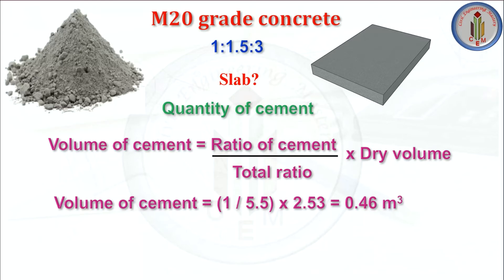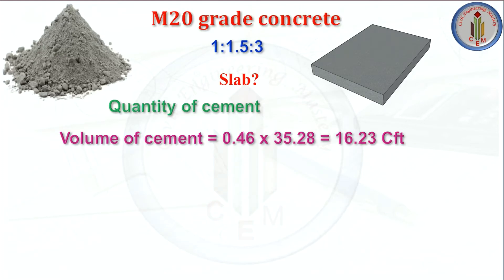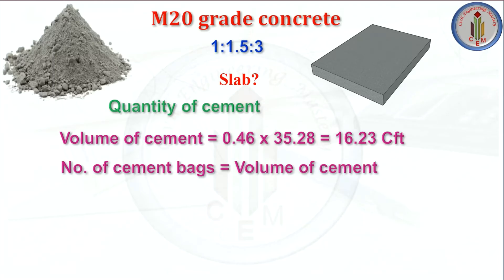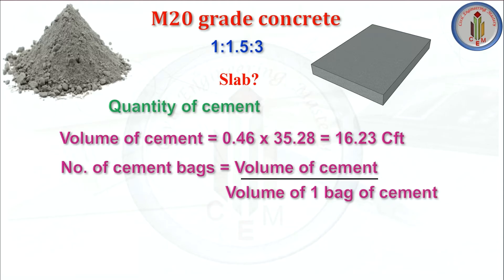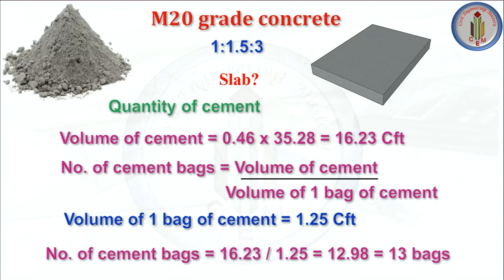Volume of cement is 0.46 meter cube. We need to convert this into CFT — 1 meter cube equals 35.28 CFT. So volume of cement equals 0.46 multiplied by 35.28, which gives 16.23 cubic feet. We need to calculate cement in bags since we buy material in bags. Number of cement bags equals volume of cement divided by volume of 1 bag of cement, which is 1.25 CFT. So number of bags equals 16.23 divided by 1.25, giving 12.98 — we consider that as 13 bags.